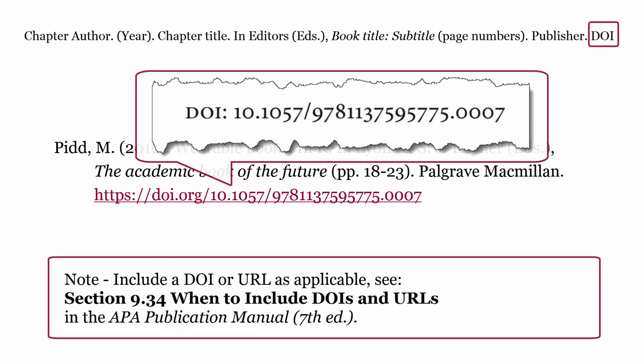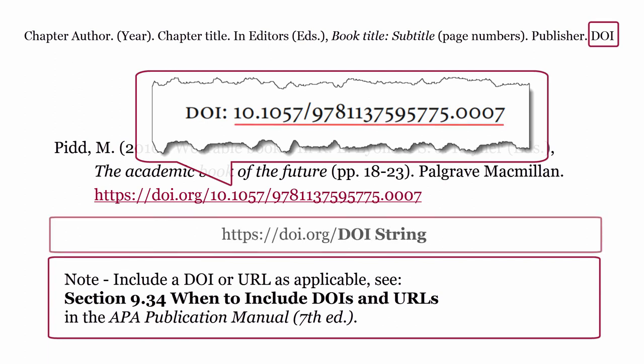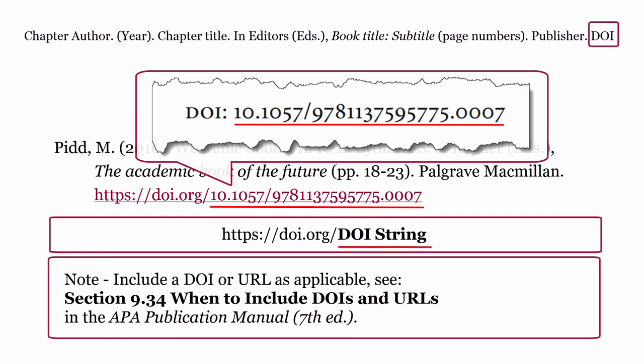Include a DOI or URL as applicable. See section 9.34 on when to include DOIs and URLs in the APA Publication Manual, 7th edition. DOI stands for Digital Object Identifier. Start the URL with https://doi.org and then the DOI string.